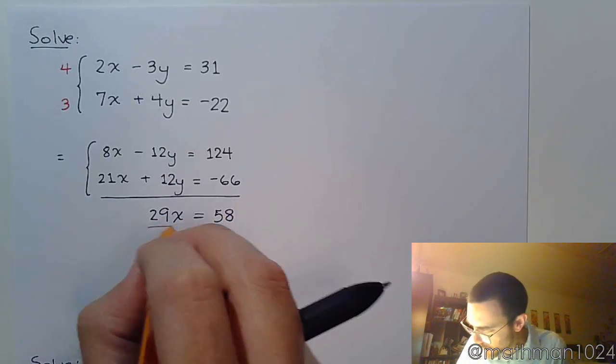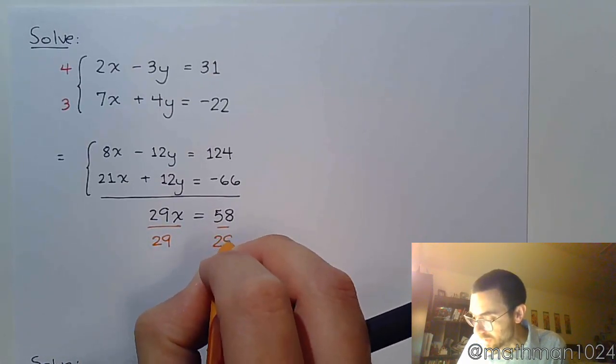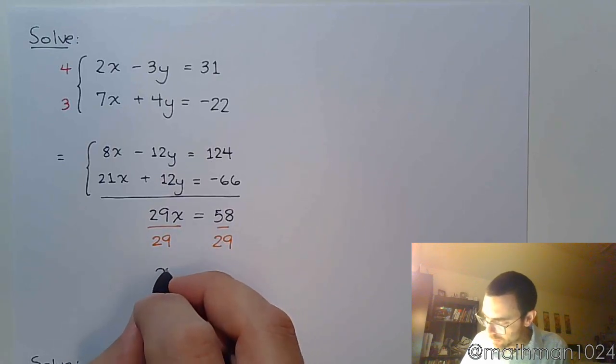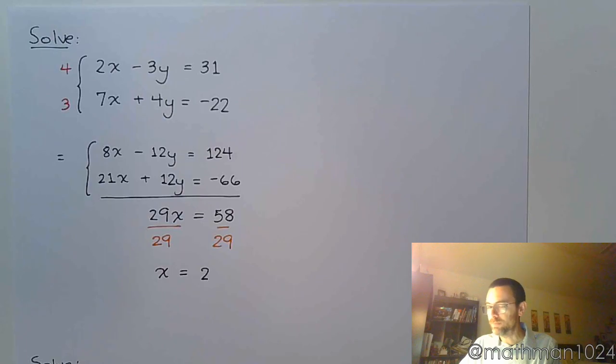124 minus 66 is 58. And then one small little step here to give the x completely by itself, divide by 29 and x equals 2. And so now that we have x equals 2 let's plug that back into one of the original equations to see what y equals.